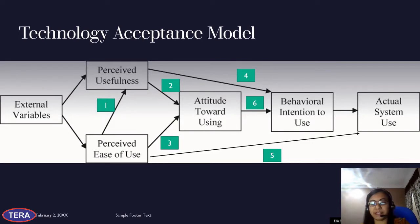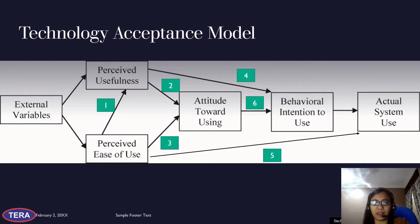This is the Technology Acceptance Model I was referring to. To determine whether someone has accepted a technology introduced to them, we look at perceived usefulness and perceived ease of use — meaning their perception of whether the technology is useful, and whether it is easy to use. These two attributes contribute to their attitude towards using the technology.